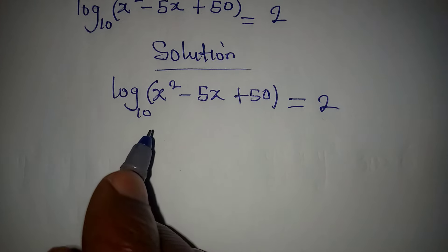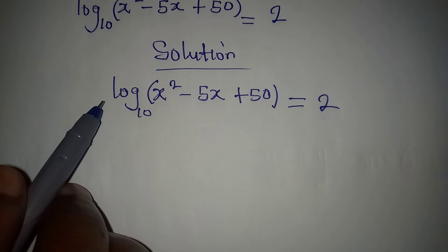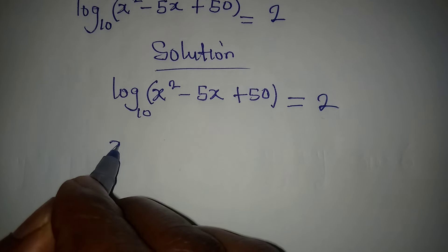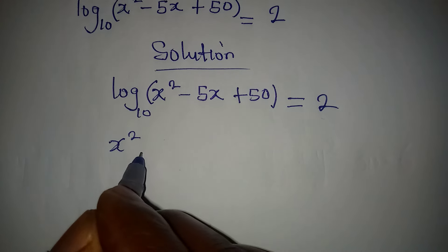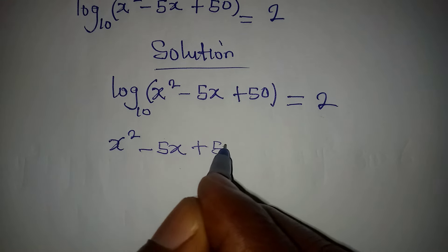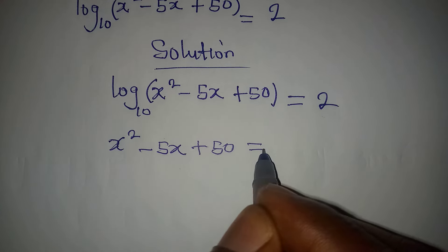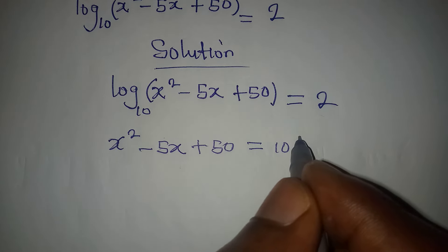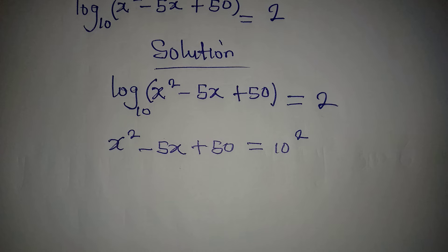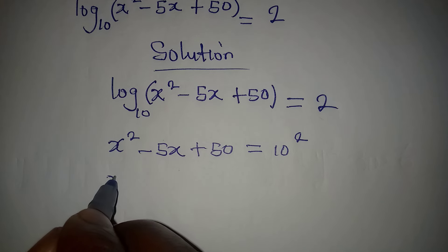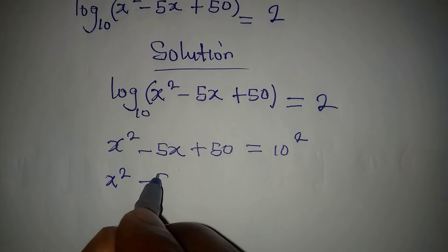From here, what we'll do is relate these two indices and the log will be gone. The law says x² - 5x + 50 will be equal to 10 to the power of 2. So the log has gone.